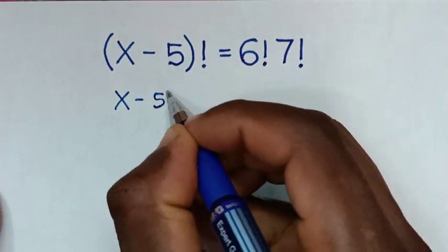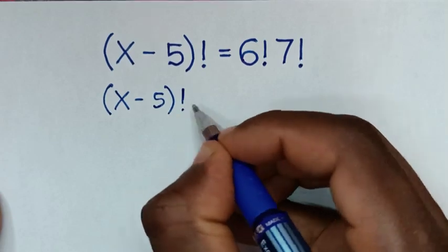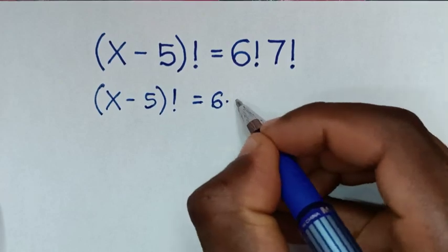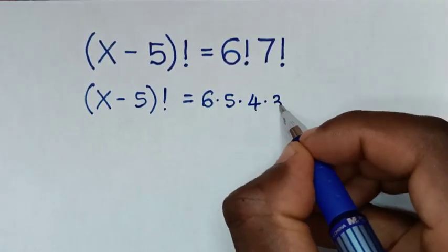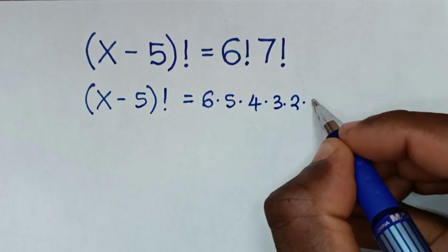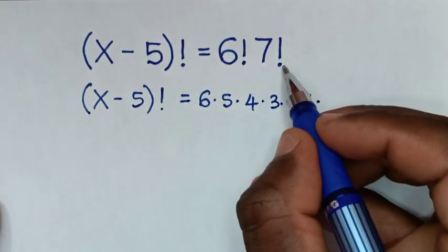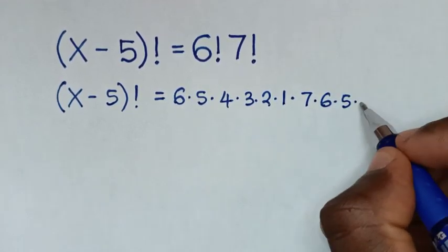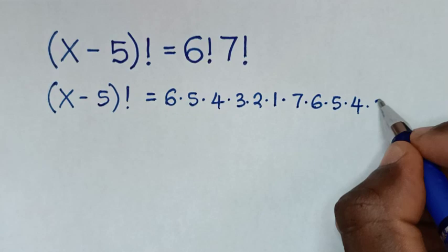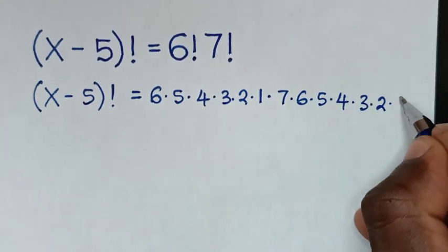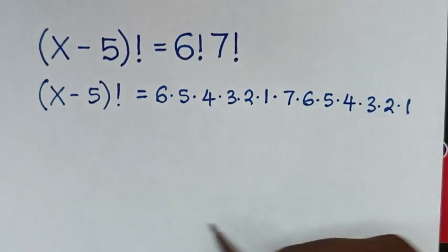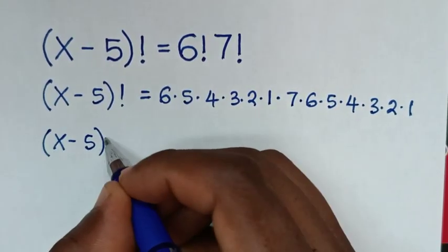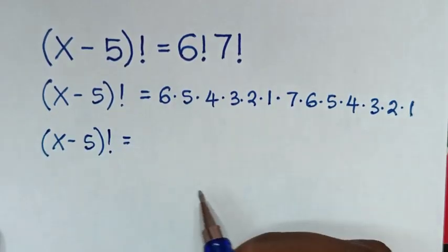On the left side it is (x minus 5) factorial, and on the right side we expand: 6 factorial is 6 times 5 times 4 times 3 times 2 times 1, then times 7 factorial which is 7 times 6 times 5 times 4 times 3 times 2 times 1.